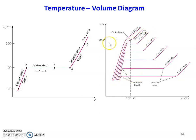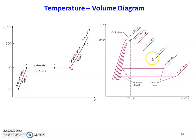What is the observation from the temperature-volume diagram? The horizontal length between the saturated liquid point and the saturated vapor point — that length is called the latent heat of evaporation. As pressure increases, the latent heat of evaporation decreases. So the horizontal length represents the latent heat of evaporation, and it decreases with increasing pressure.